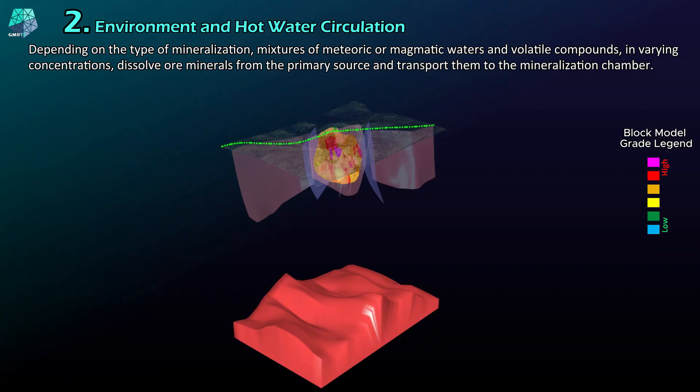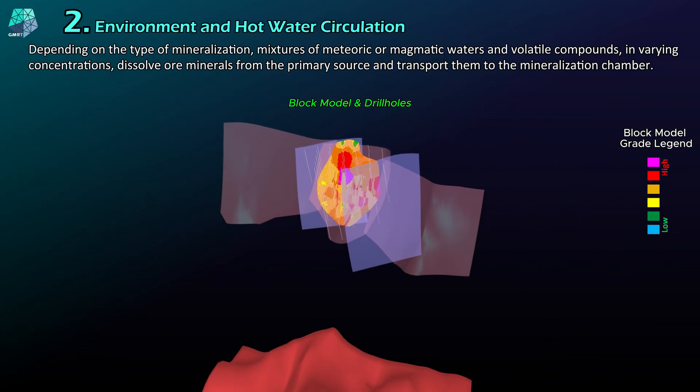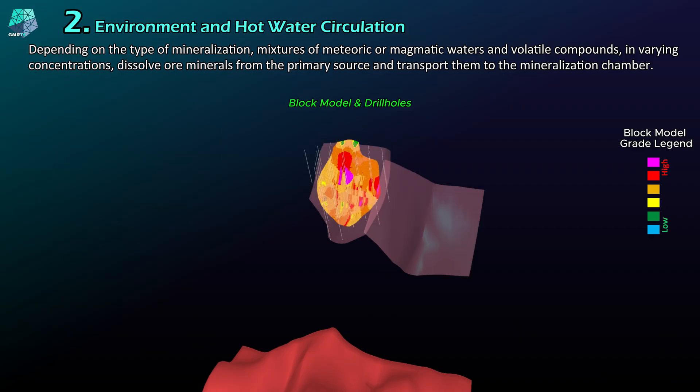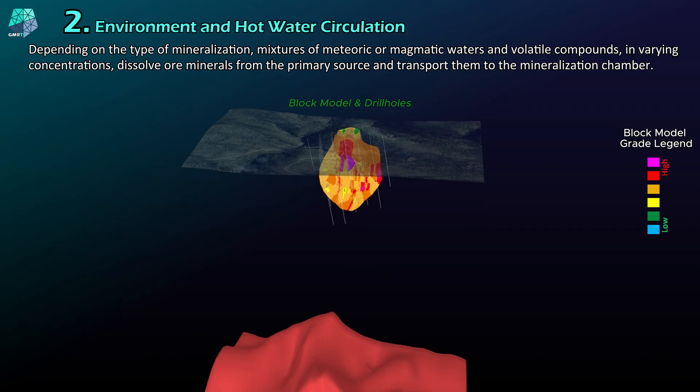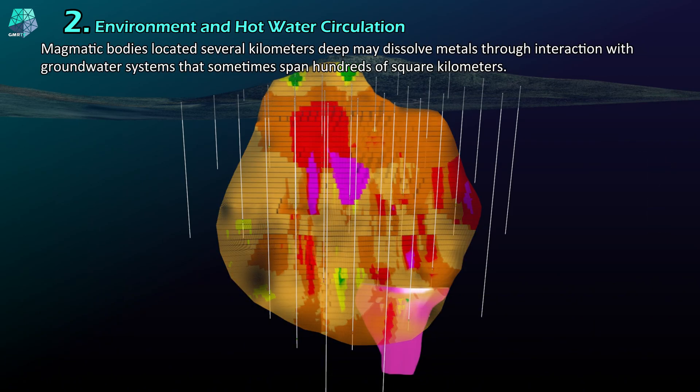Depending on the type of mineralization, mixtures of meteoric or magmatic waters and volatile compounds, in varying concentrations, dissolve ore minerals from the primary source and transport them to the mineralization chamber.